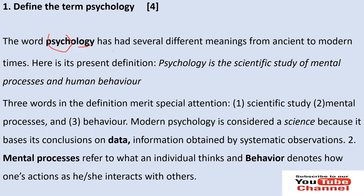If you look at this definition, you'll notice that there are three parts: scientific study, mental processes, and human behaviour. When we talk about modern psychology, it is considered a science because it bases its conclusions on data and information obtained from systematic observations. Mental processes refer to what individuals think, and behaviour denotes one's actions as they interact with others. For this question, you are guided by the number of marks — for four marks, write briefly and concisely what we mean by the term psychology.